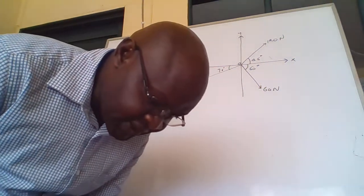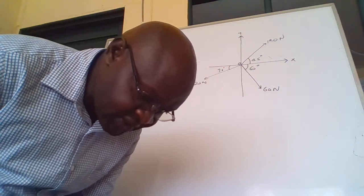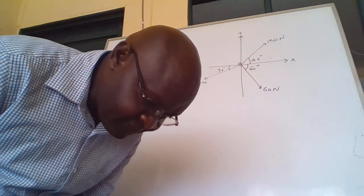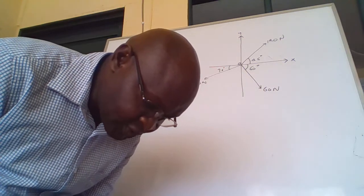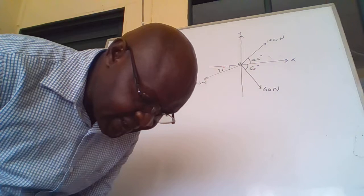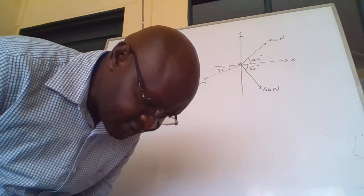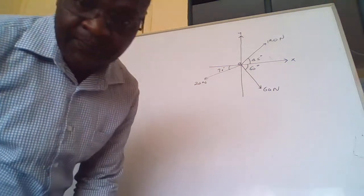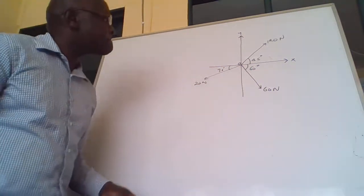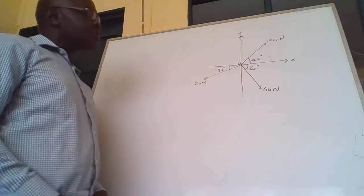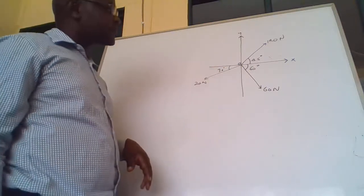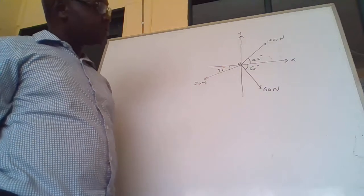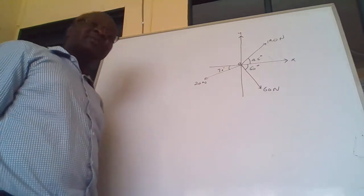Figure 1 shows a diagram of a system of forces acting at a point O. By resolution, find the magnitude and direction of the resultant force. The figure is on the board. These are the forces acting on a point, and we have to get the magnitude and the direction of the resultant.